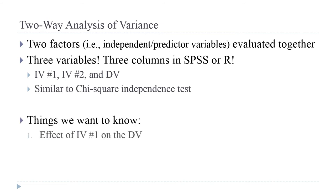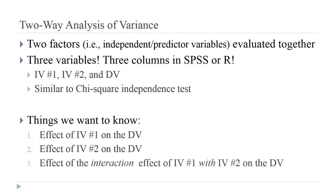The things we want to know are: first, the effect of the first independent variable on the dependent variable — that's what we want to know with a regular one-way ANOVA. And then we want to know the effect of the other independent variable on the dependent variable. That's another one-way analysis of variance.